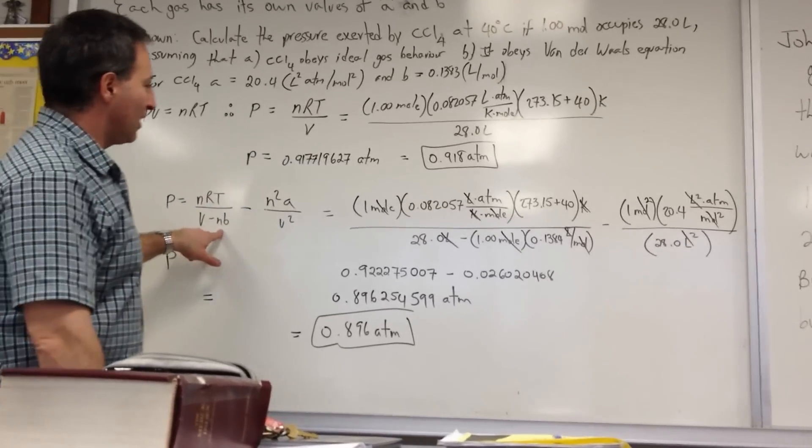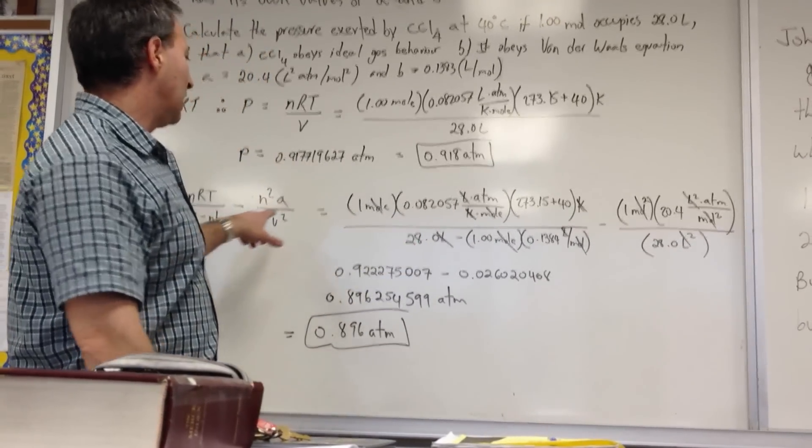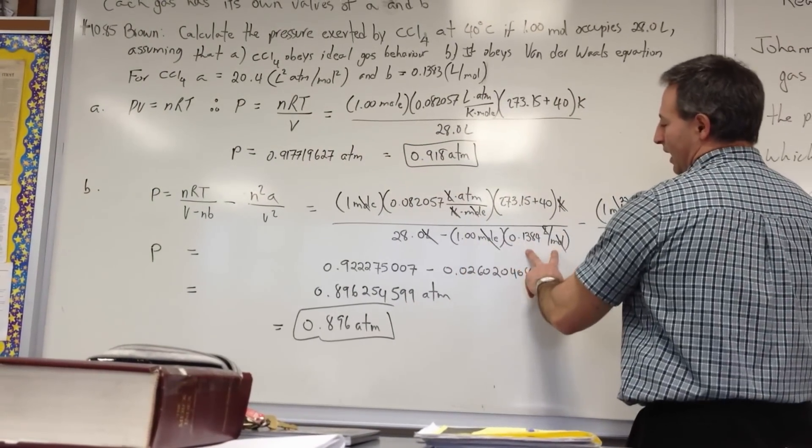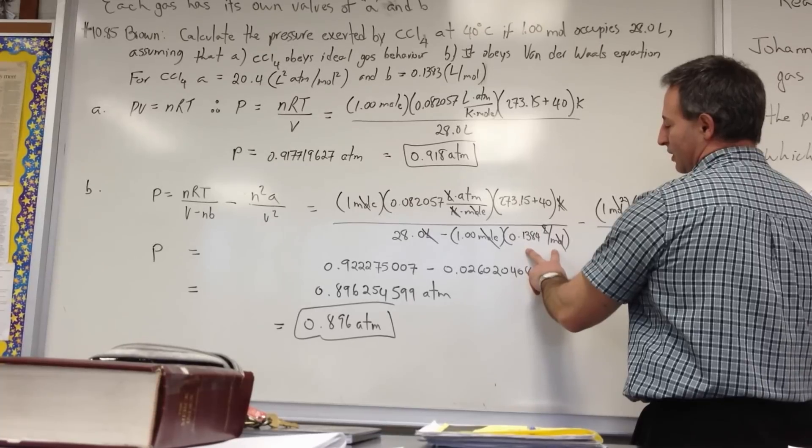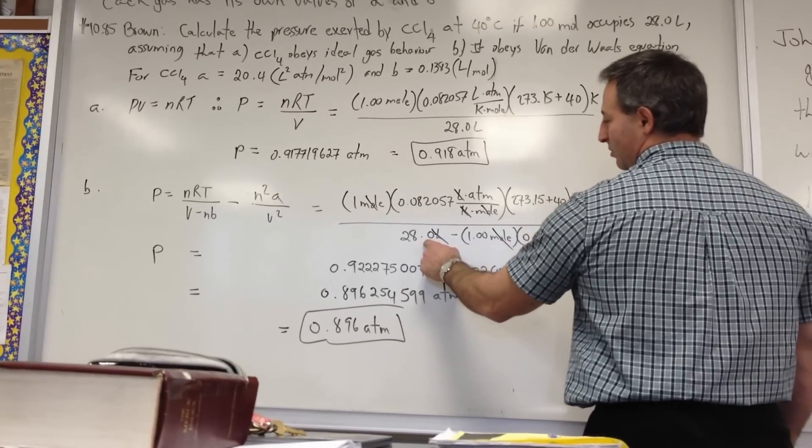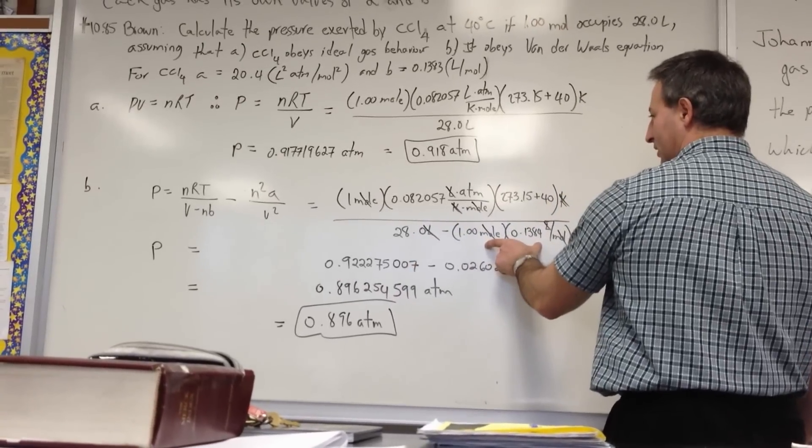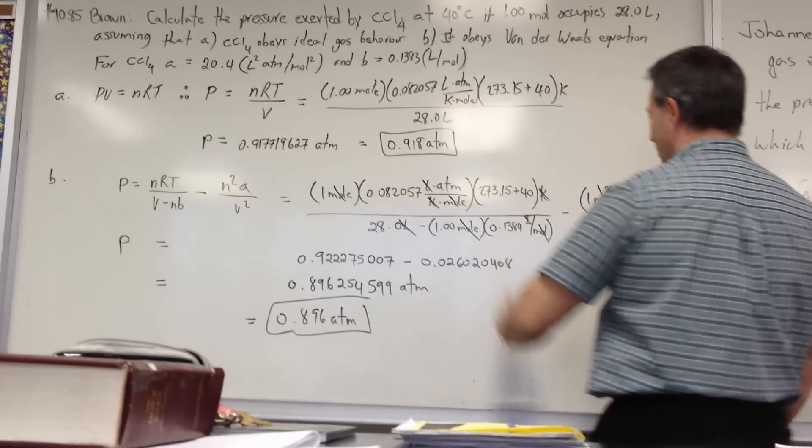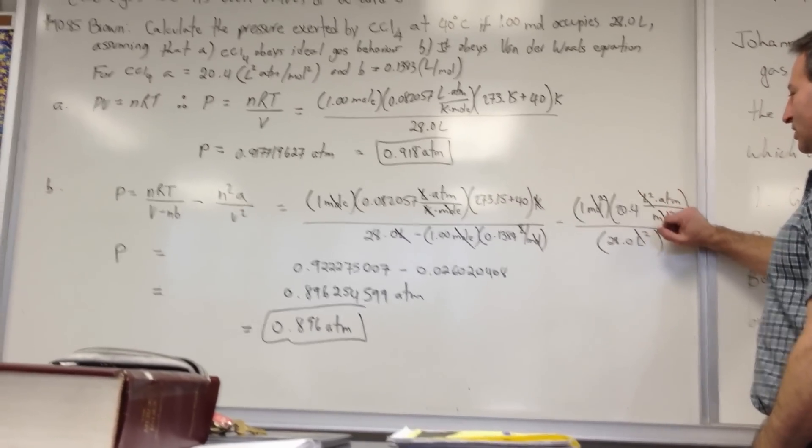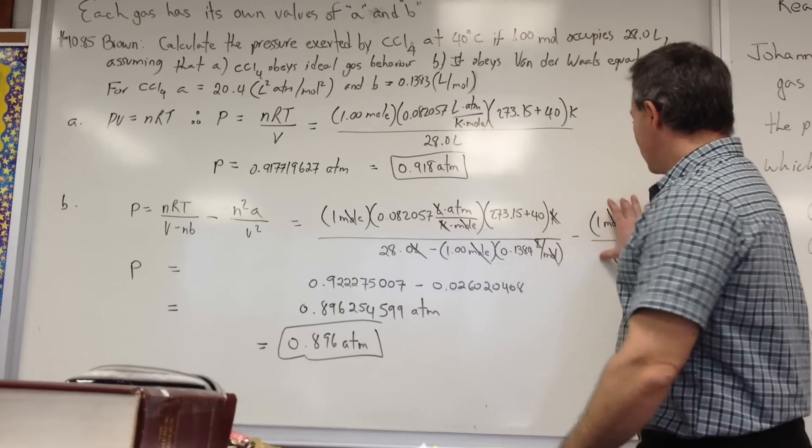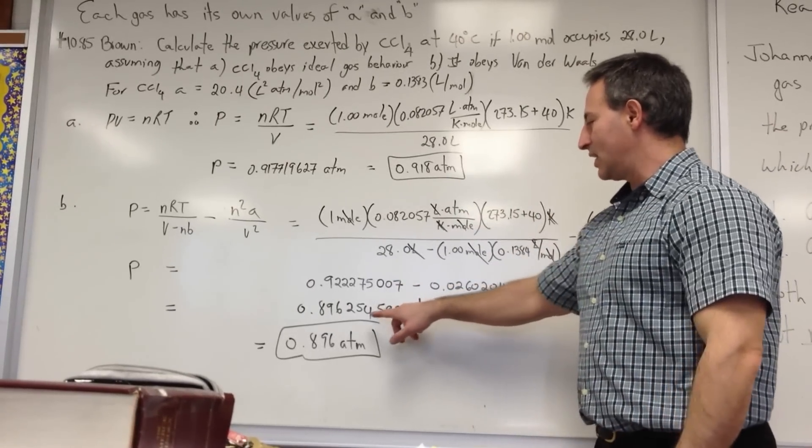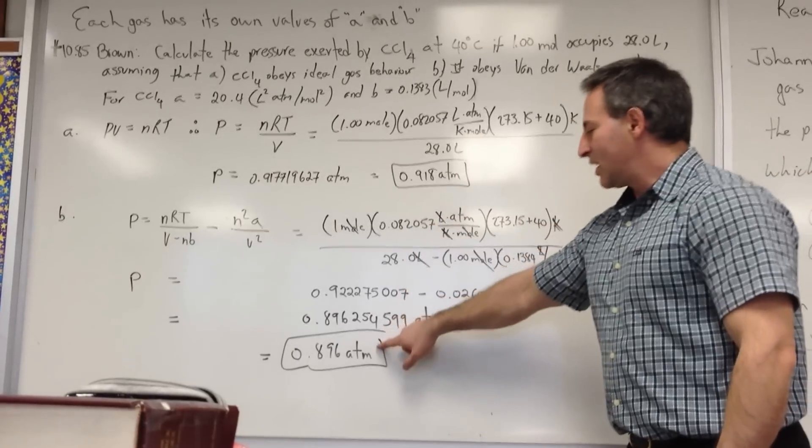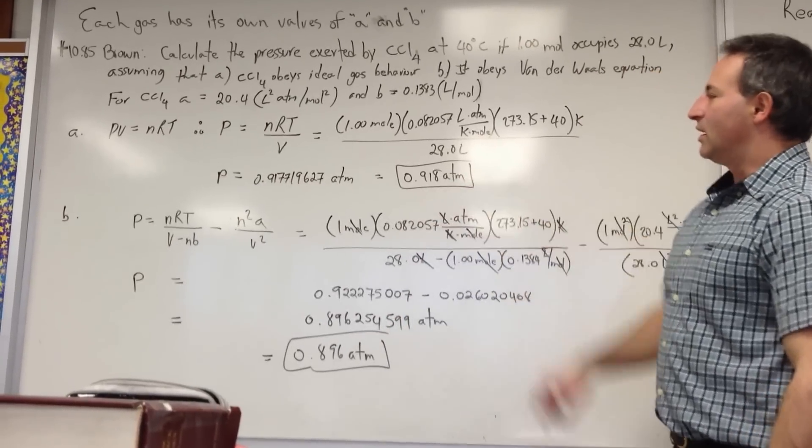In part B, what we've done is we used the Van der Waals equation. Again, we plugged in everything. Notice the value of NB is for one mole, and the gas occupies 0.1384 liters per mole. So that reduces the available volume of 28 liters by that amount, thereby increasing the value of this term. So this has the effect of increasing the pressure. This term has the effect of decreasing the pressure by a certain amount. When we find these two values, we subtract one from the other, and we get the answer of 0.896 atmospheres. So we see that the Van der Waals equation predicts a slightly lower pressure for the gas than would the ideal gas equation.